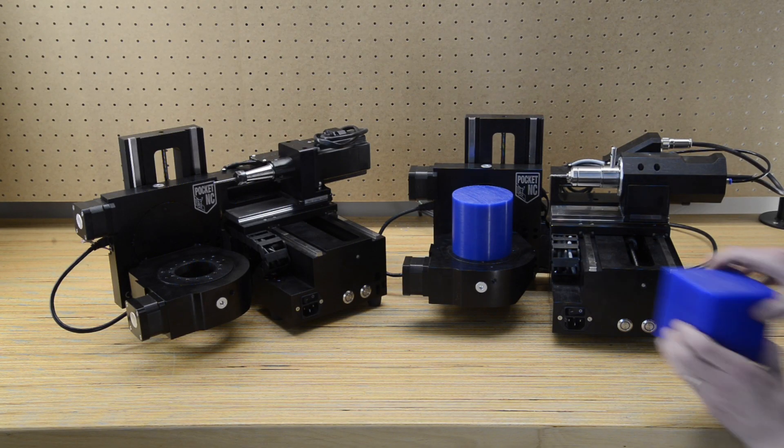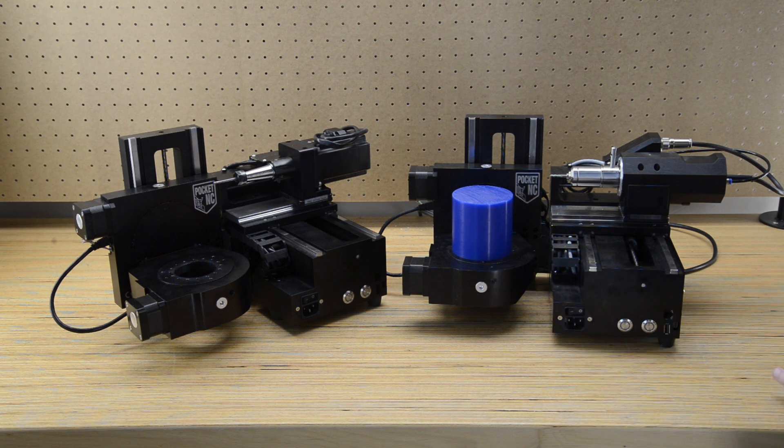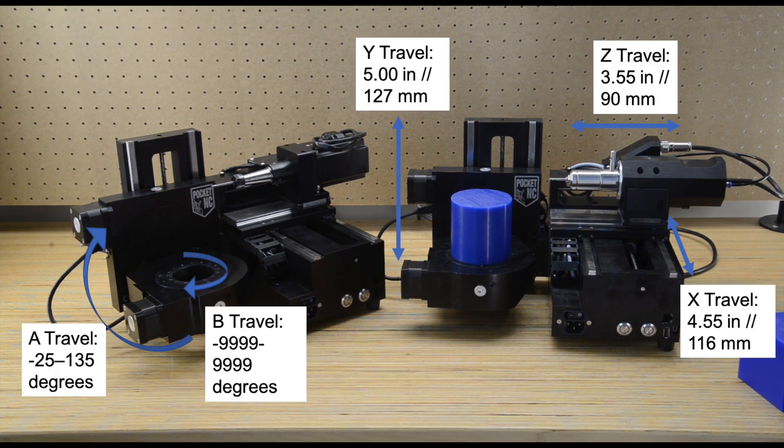The Pocket NC can comfortably cut a 3 inch cube or round. Based on workholding, you can cut a part that is bigger in one dimension but smaller in another.